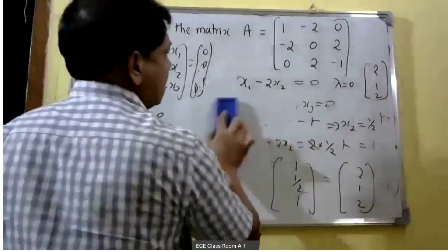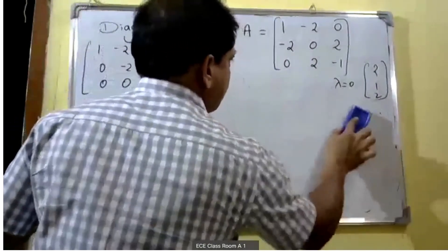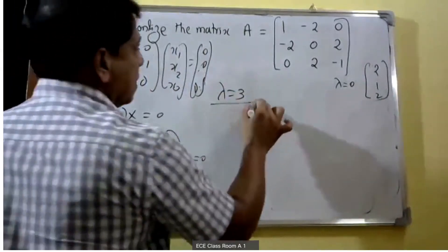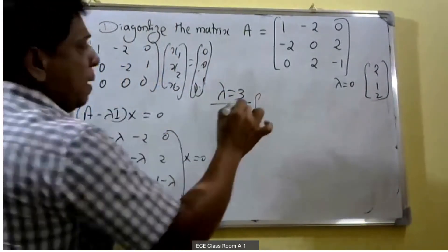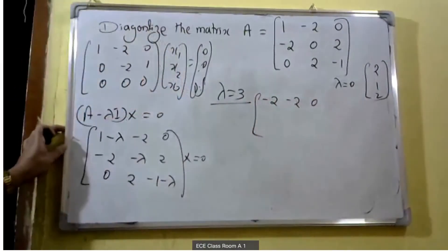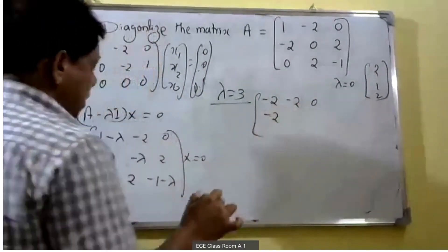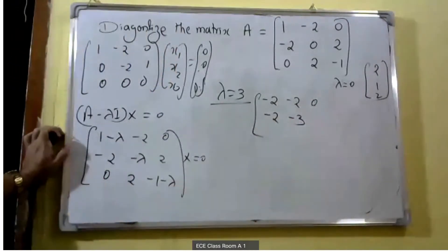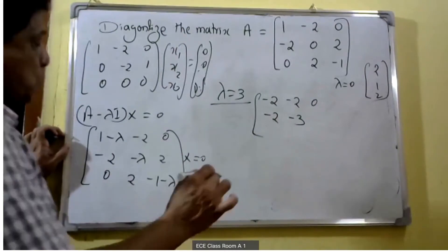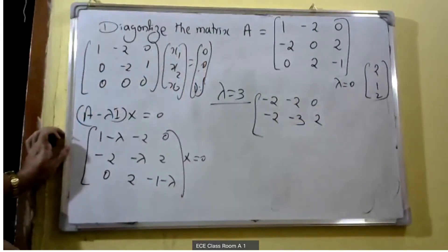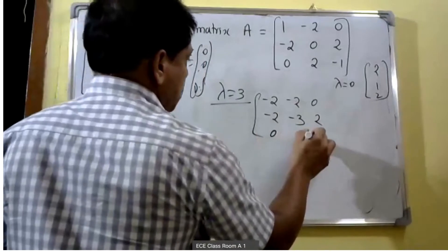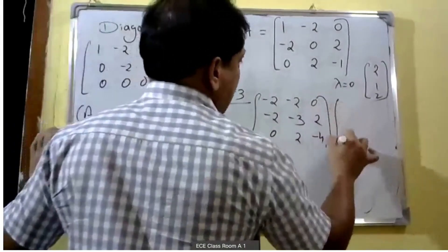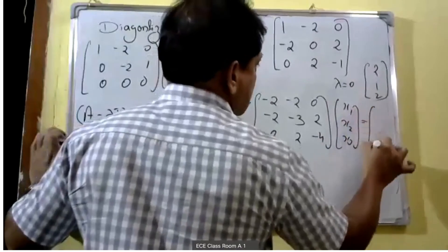Next we find the eigenvector for lambda equal to 3. The eigenmatrix becomes [1-3, -2, 0; -2, 0-3, 2; 0, 2, -1-3] which is [-2, -2, 0; -2, -3, 2; 0, 2, -4] times [x1; x2; x3] equals zero. We convert this matrix into echelon form.